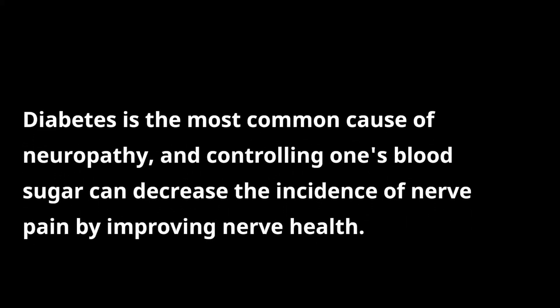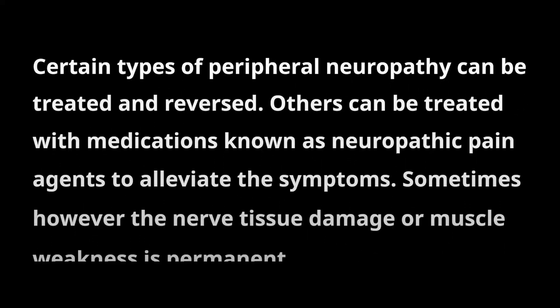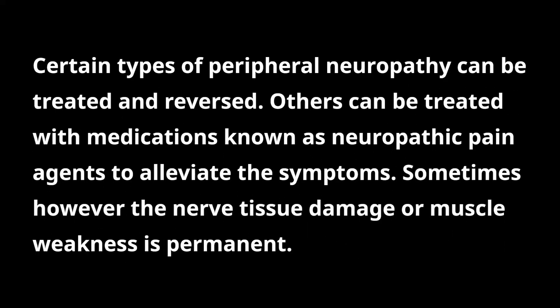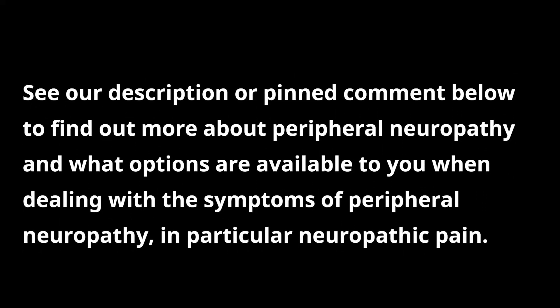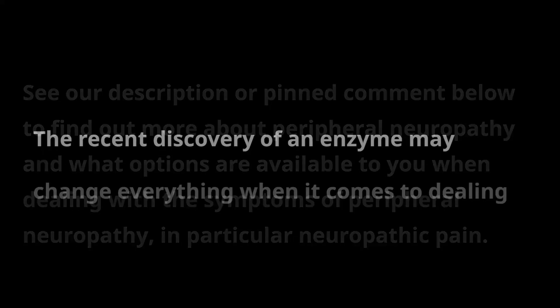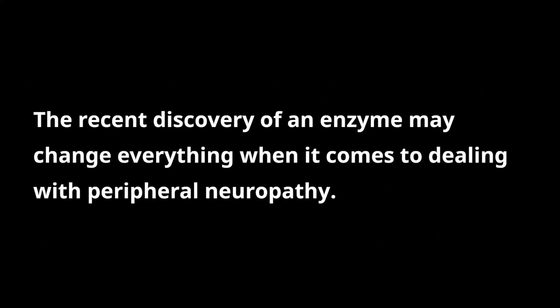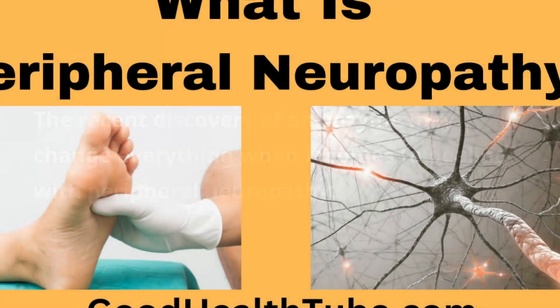Diabetes is the most common cause of neuropathy, and controlling one's blood sugar can decrease the incidence of nerve pain by improving nerve health. Certain types of peripheral neuropathy can be treated and reversed; others can be treated with medications known as neuropathic pain agents to alleviate the symptoms. Sometimes, however, the nerve tissue damage or muscle weakness is permanent. See our description or pinned comment below to find out more about peripheral neuropathy and what options are available to you. The recent discovery of an enzyme may change everything when it comes to dealing with peripheral neuropathy.